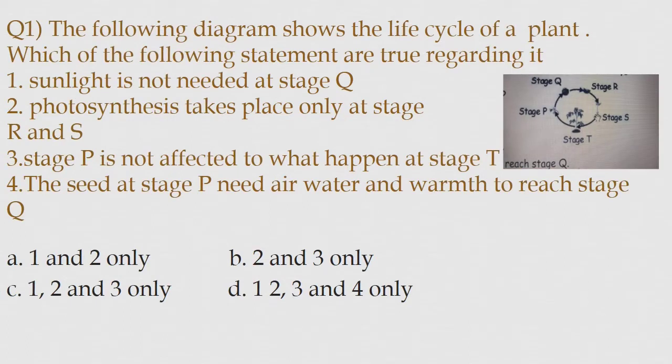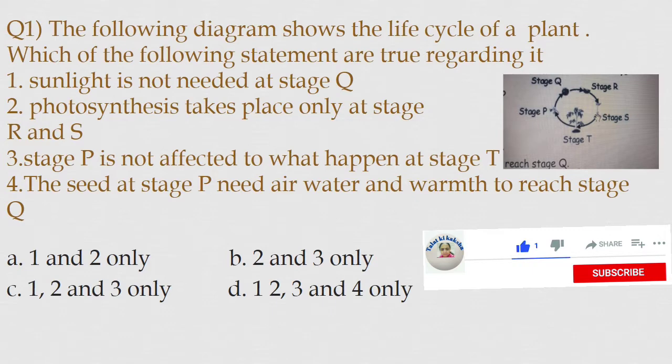The following diagram shows the life cycle of a plant. Which of the following statements are true regarding it? 1. Sunlight is not needed at stage Q. 2. Photosynthesis takes place only at stage R and S.